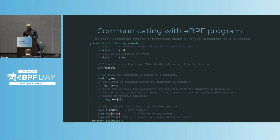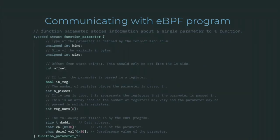For each function parameter — input or output — we have a ton of information: what kind of variable it is, what the size is, the offset from the stack pointer if it's a stack-based ABI, or which register if it's register-based. We also include the information we want to convey back to user space — the actual raw bytes of these variables. We pass all of this back through various structs using ring buffers and maps.